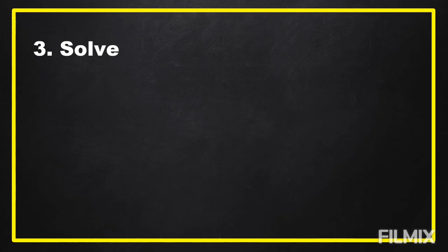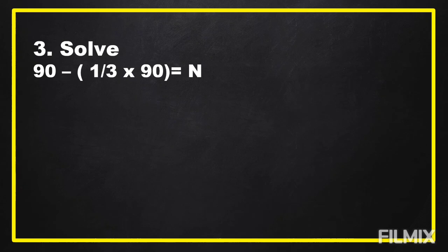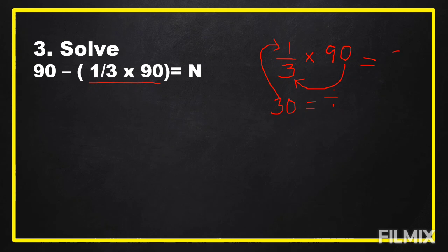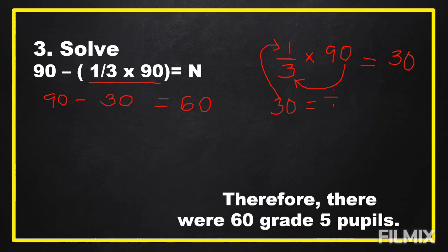The next step is to carry out the plan and solve it. Our number sentence is 90 minus (1/3 times 90) equals N. We solve first the numbers inside the parentheses to get one-third of 90. Using the shortcut method, divide 90 by 3, which equals 30, then multiply this quotient by the numerator 1, giving 30. So one-third of 90 is equal to 30. Then we compute 90 minus 30, which equals 60. Therefore, there were 60 grade 5 pupils.